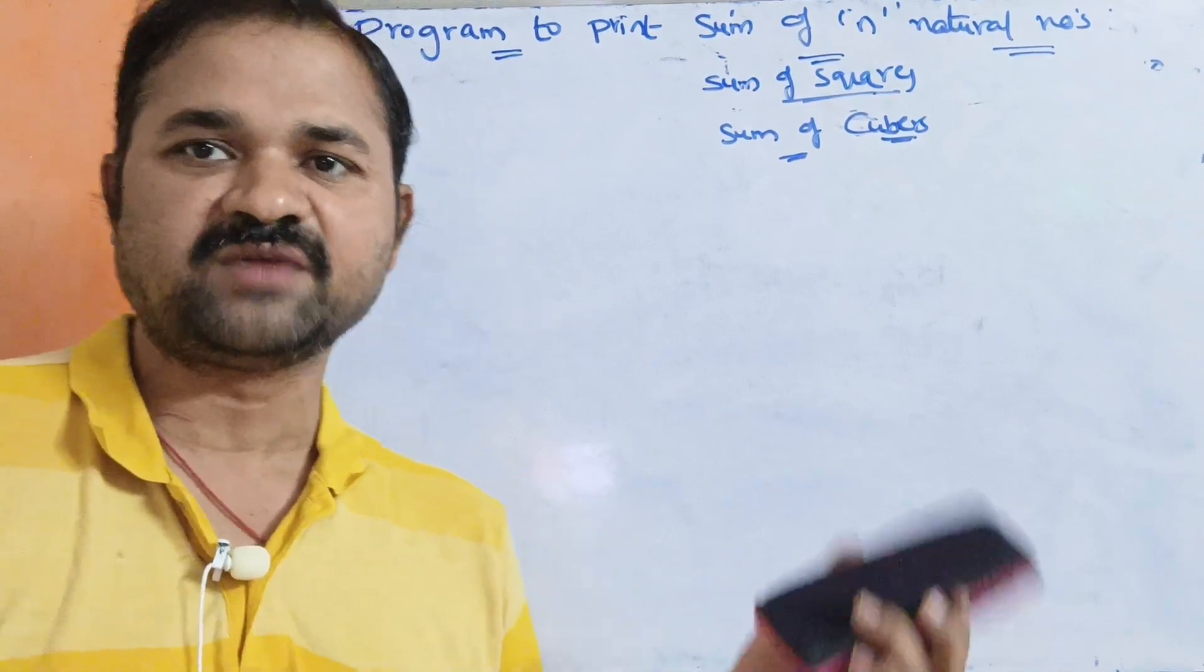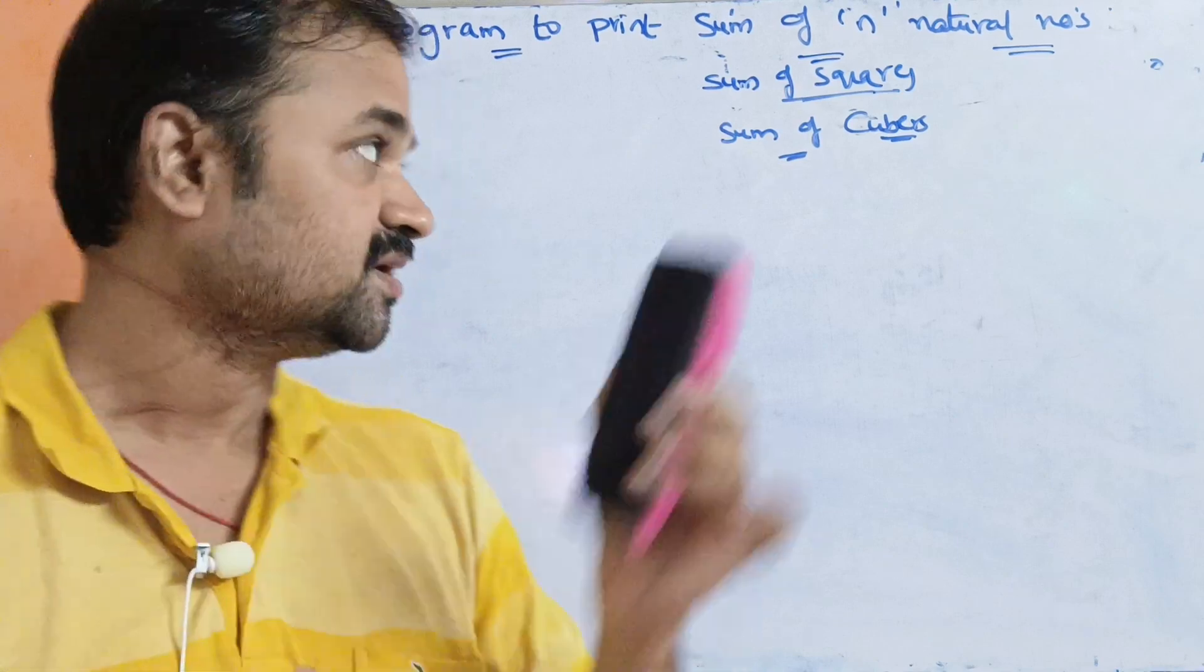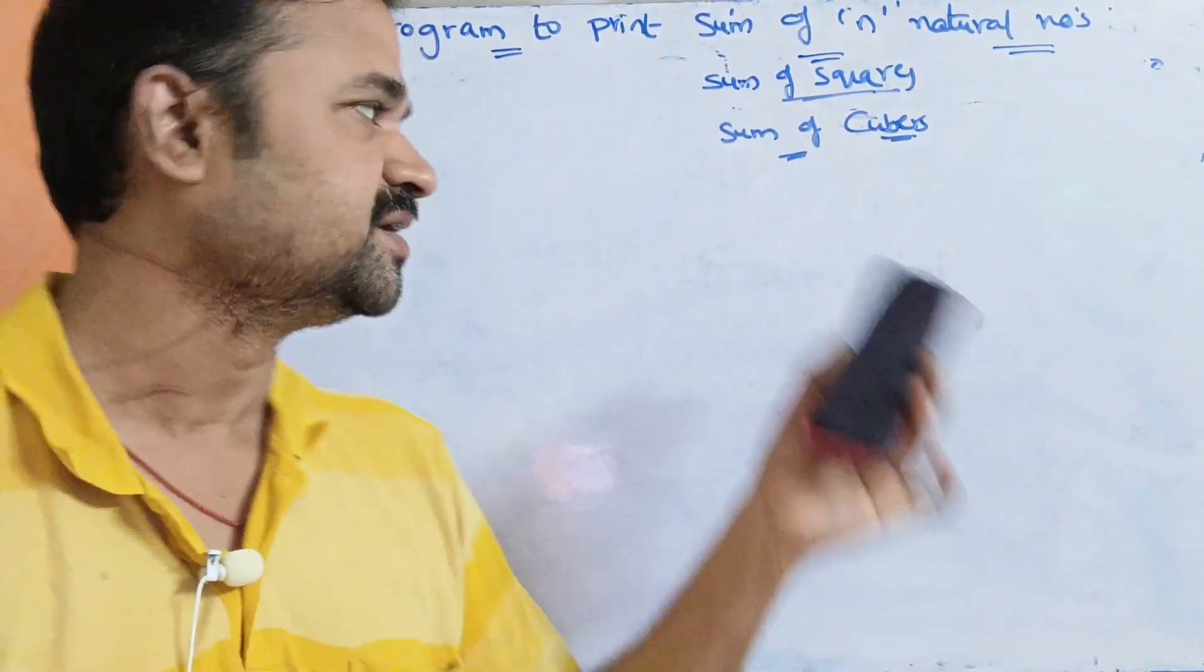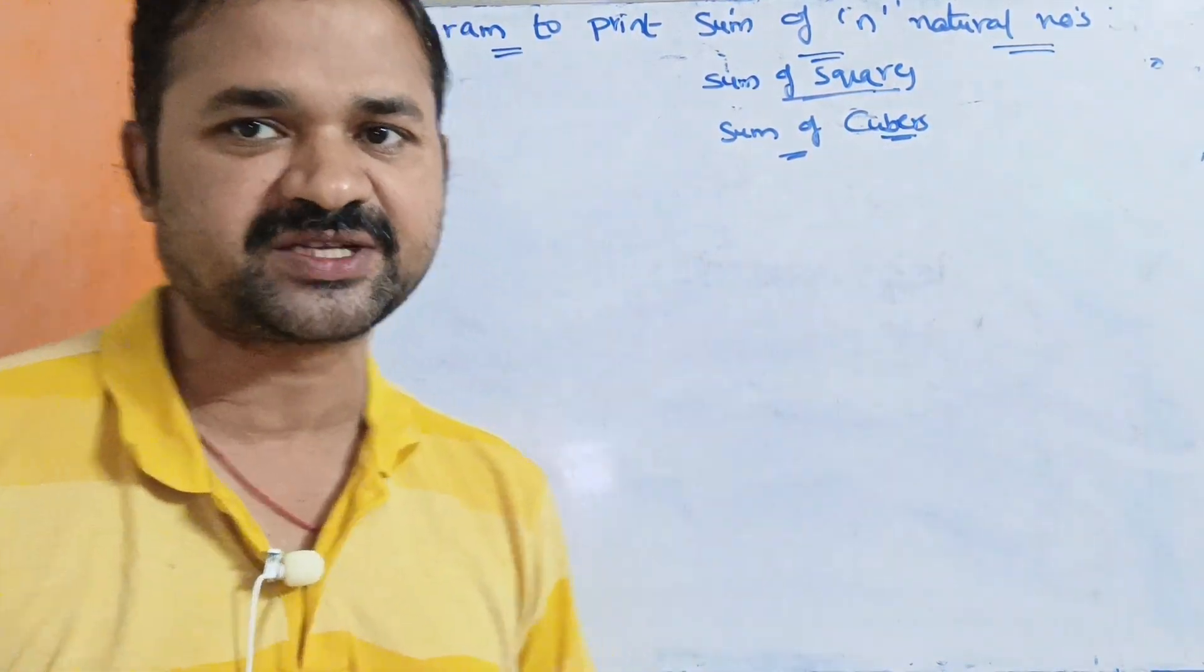We will discuss three programs. C program to print sum of n natural numbers. C program to print sum of squares of n natural numbers. C program to print sum of cubes of n natural numbers.